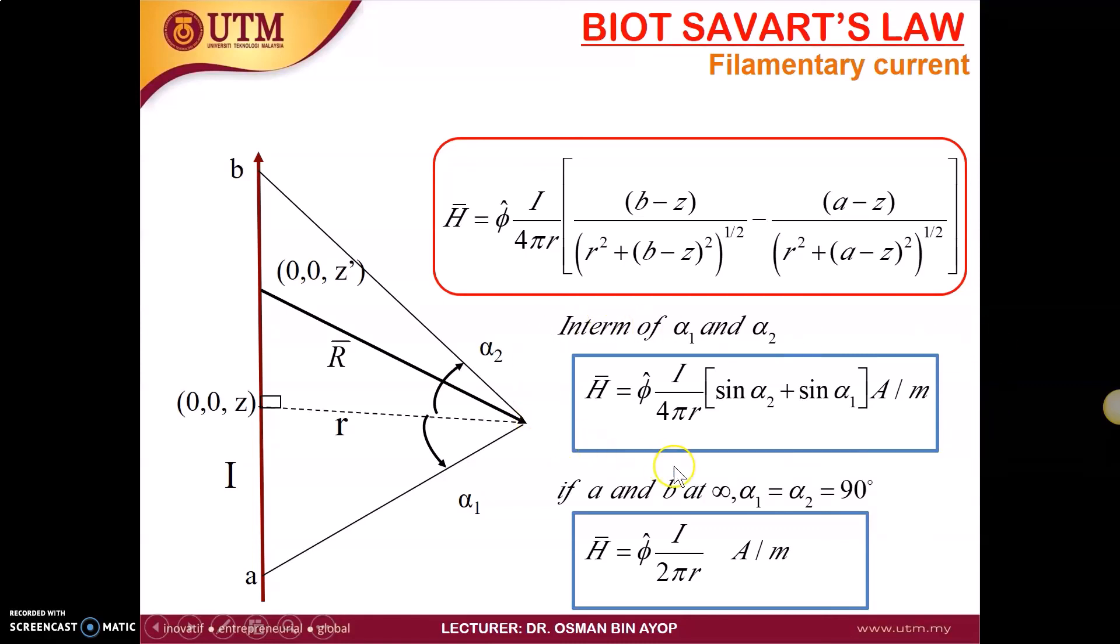This form will be given during your exam. So no need to remember, but you have to understand what it is. And what happened if your filament is very long? Alpha 1 and alpha 2 will become very large, approximately to 90 degrees. So we can simplify our expression to be H equal to I divided by 2 pi R ampere per meter.